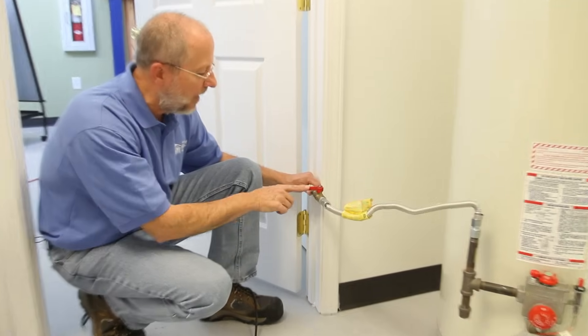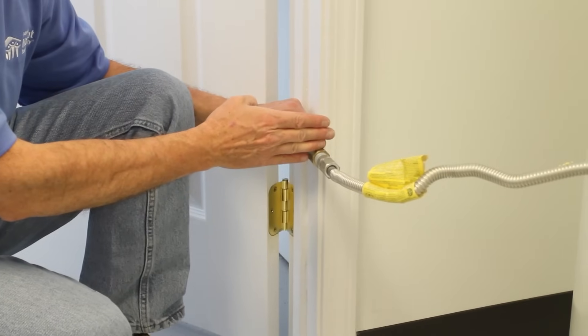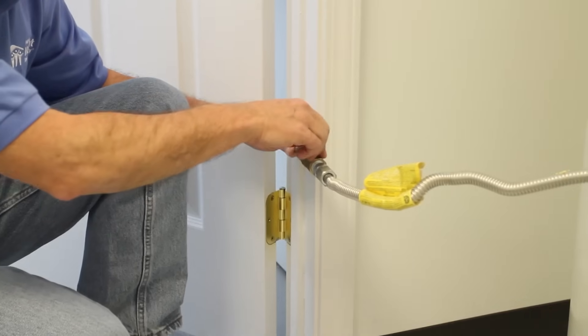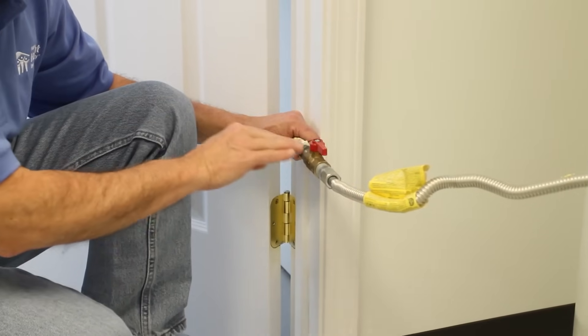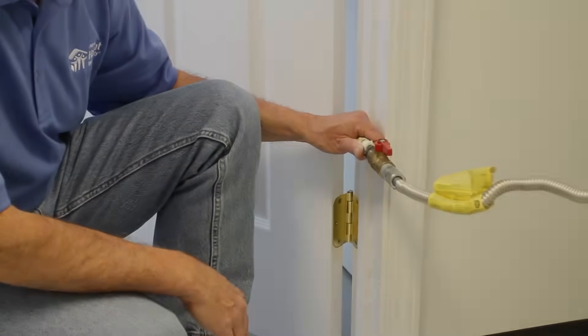Valves like this one, when they are crosswise to the pipe, that means the flow of gas is off. And when it's lined up with the flow of the pipe, that means the gas is on.